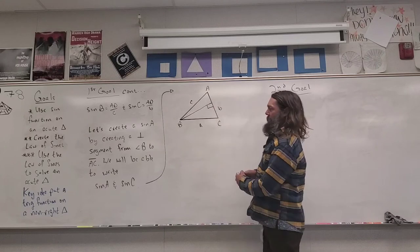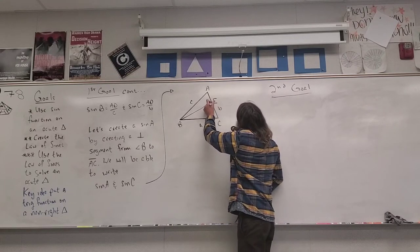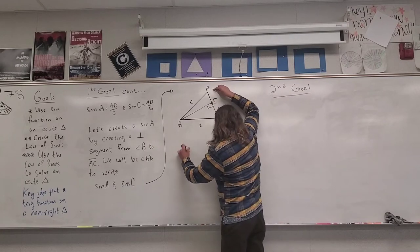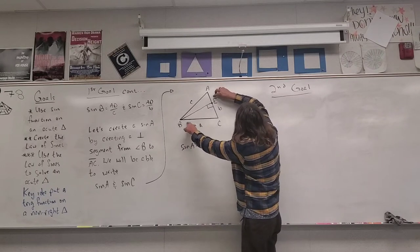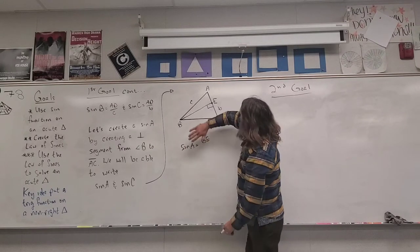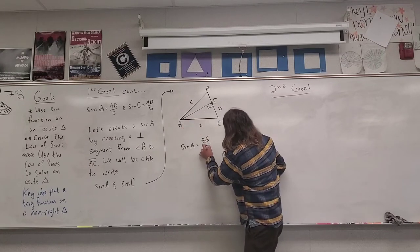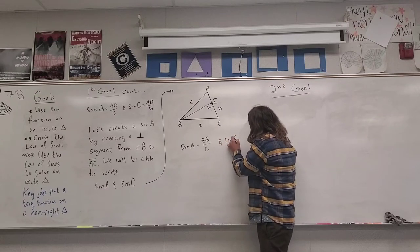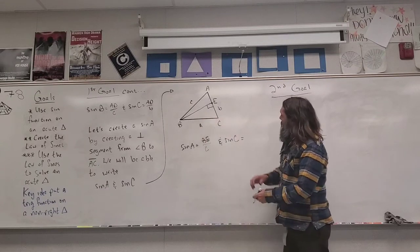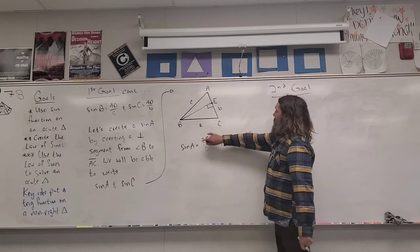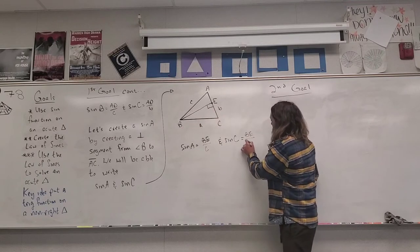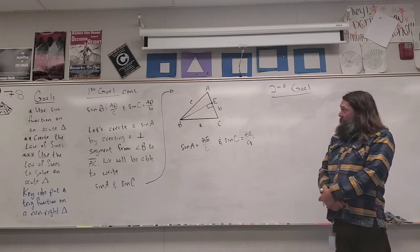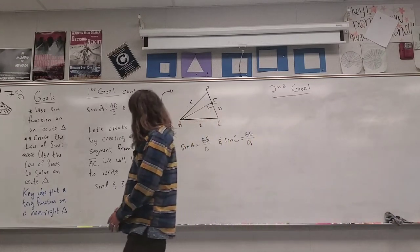The segment is going to intersect at point E. Sine of angle A is equal to the opposite length — that's the length of BE — divided by the hypotenuse of that right triangle, which is the length of C. And sine of angle C is equal to the opposite length, which is again the length of BE, divided by the hypotenuse for that little triangle, which is length A. Our first goal was to use the sine function on an acute triangle, and I now have sine functions on all the angles. First goal complete.